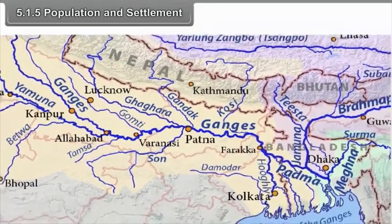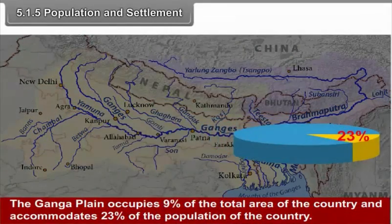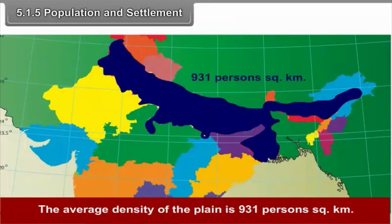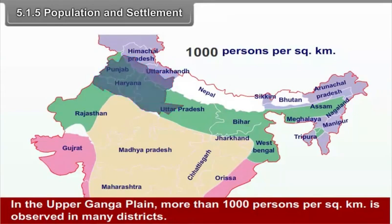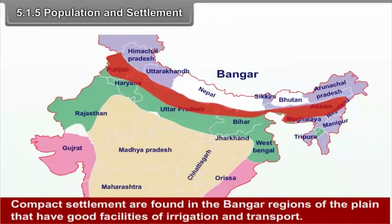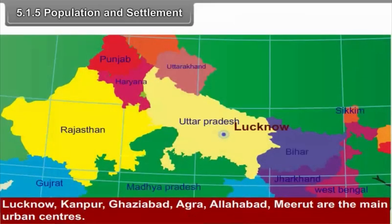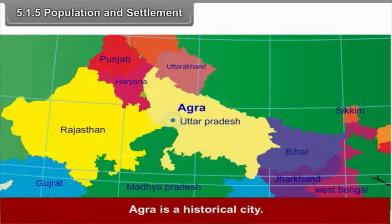5.1.5 Population and Settlement. The Ganga plain occupies 9% of the total area of the country and accommodates 23% of the population. The average density of the plain is 931 persons per square kilometer. In the upper Ganga plain, more than 1000 persons per square kilometer is observed in many districts. Compact settlements are found in the Bhangar regions that have good facilities of irrigation and transport. Lucknow, Kanpur, Ghaziabad, Agra, Allahabad and Meerut are the main urban centers. Agra is a historical city.